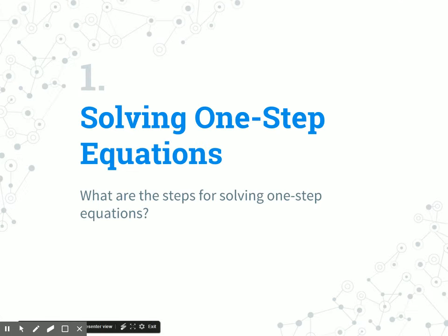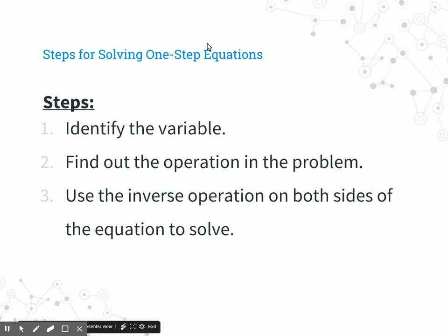Solving one-step equations — what are the steps? The steps are very simple. First, identify the variable and find out which side the variable is on. Second, find out the operation in the problem — are you doing addition, subtraction, multiplication, or division? Then, use the inverse operation on both sides of the equation to isolate the variable and solve the equation.